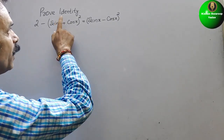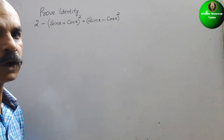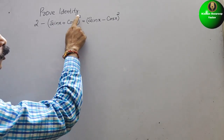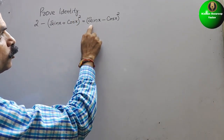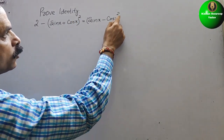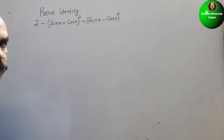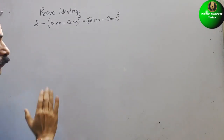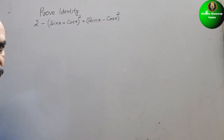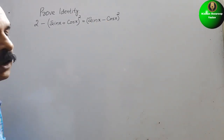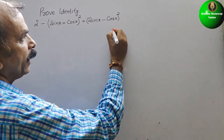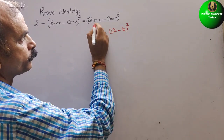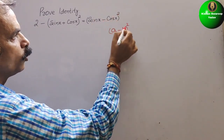Your question is to prove the identity: 2 minus (sin x + cos x) whole square is equal to (sin x minus cos x) whole square. We will take LHS and prove RHS. If you see the RHS, it is in the form of a minus b whole square.